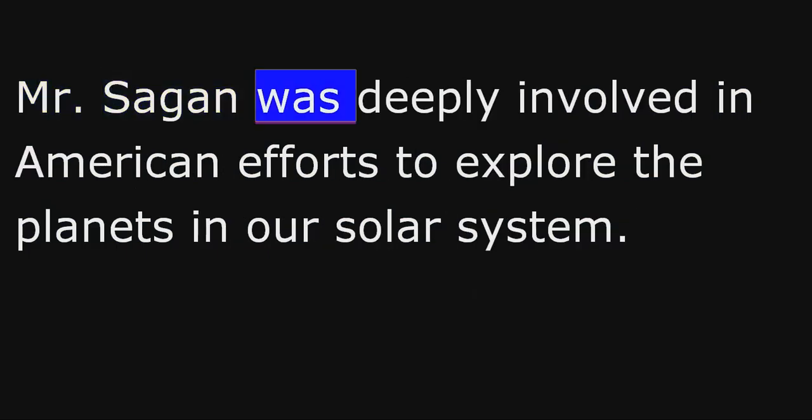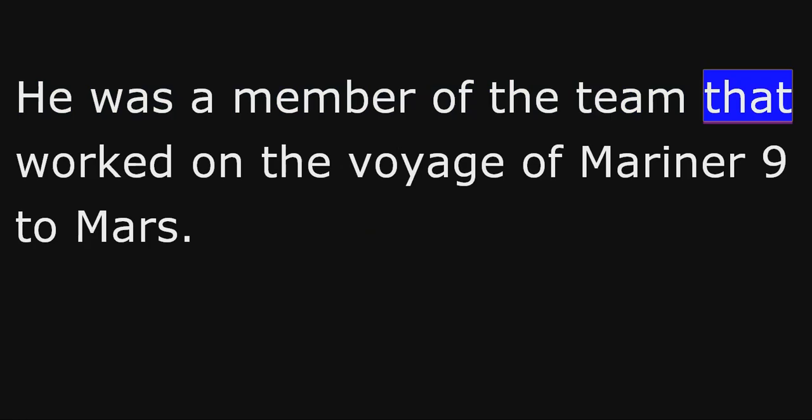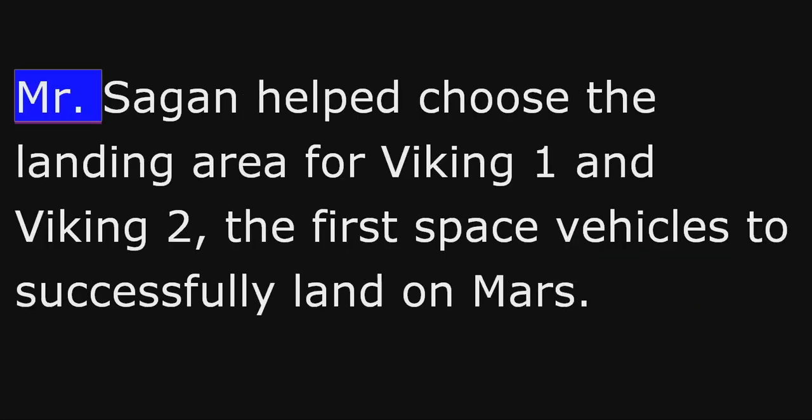Mr. Sagan was deeply involved in American efforts to explore the planets in our solar system. He was a member of the team that worked on the voyage of Mariner 9 to Mars. It was launched in 1971. Mariner 9 was the first space vehicle to orbit another planet. Mr. Sagan helped choose the landing area for Viking 1 and Viking 2, the first space vehicles to successfully land on Mars.